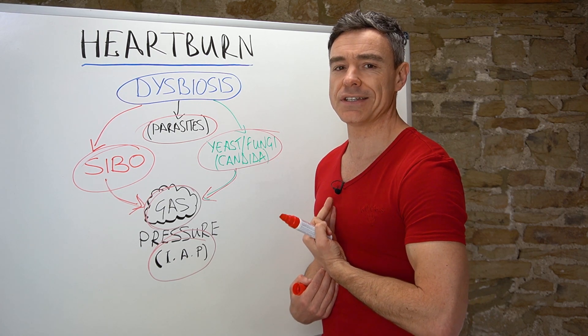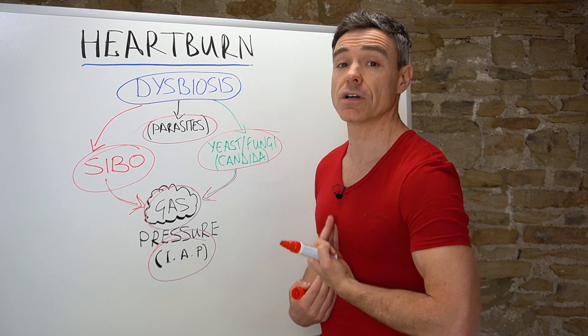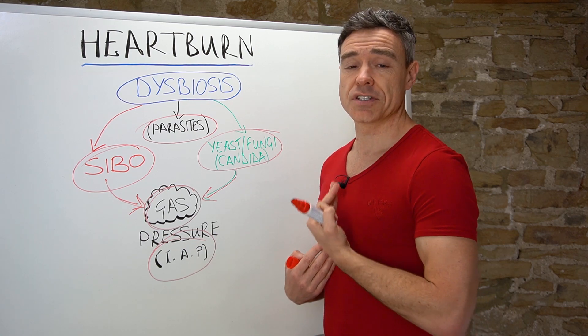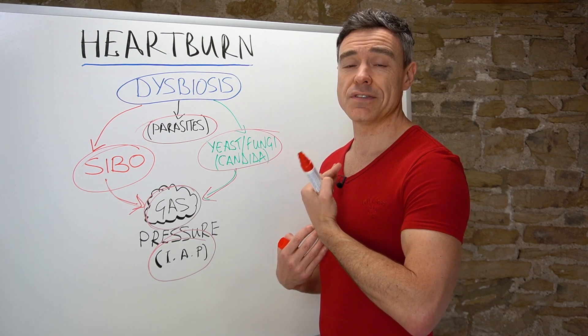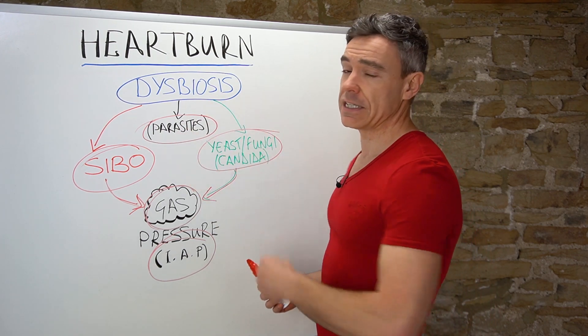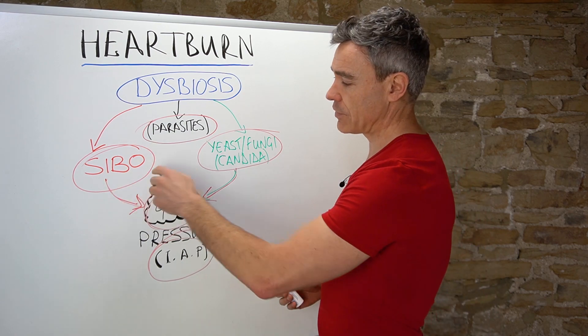As the intra-abdominal pressure increases, it pushes the contents of the small intestine and stomach upwards, and that can then push acid and stomach contents up into the esophagus. That's one of the reasons why you'll typically get heartburn as a result of having these overgrowths.